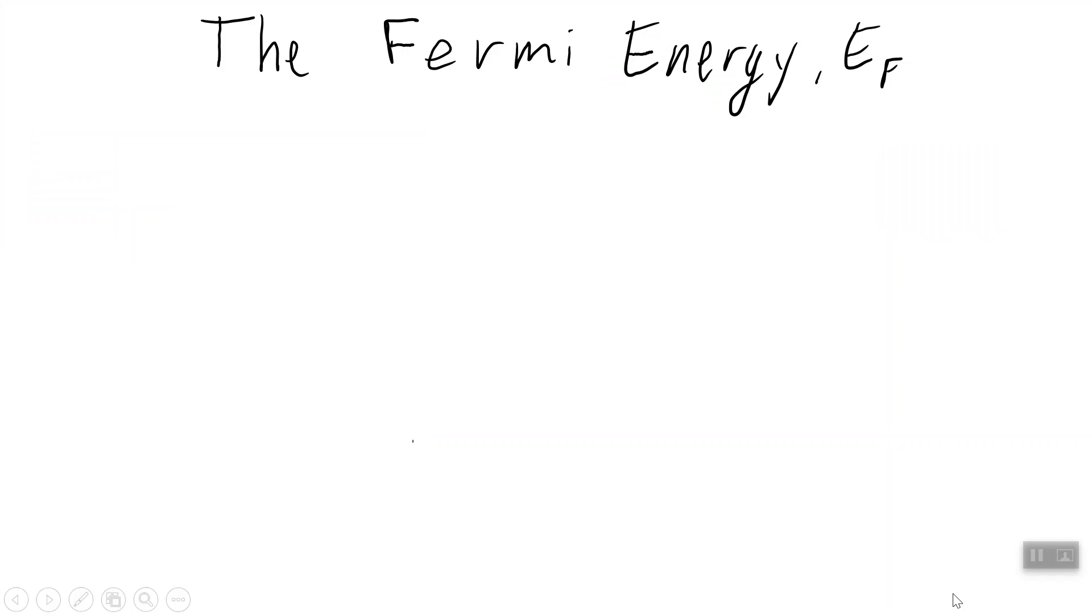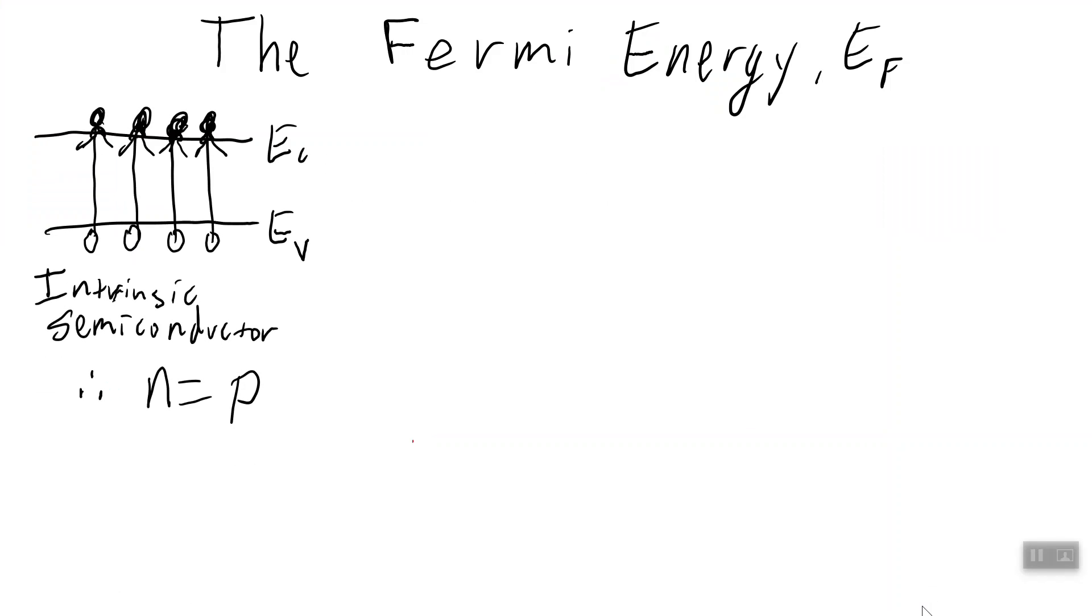The Fermi energy is located in the band gap somewhere between the valence and conduction bands. We're going to try to locate it.